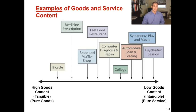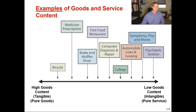Some examples of goods and services content show how they fall within either high goods content or low goods content. On the far left, things high in goods content are very tangible — a pure good like a house, car, or bicycle. On the far right is low goods content — these are intangible, more pure services. If you go to see a counselor you leave with nothing tangible. If you go to a symphony, you're just leaving with that experience. Most things we buy fall somewhere in the middle, where there is some goods content and a little bit of a service component as well.